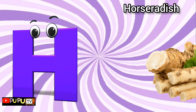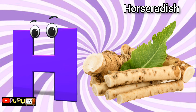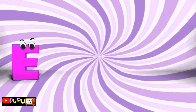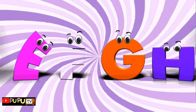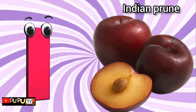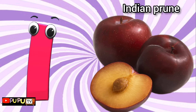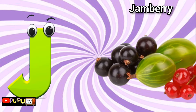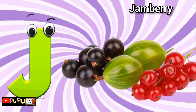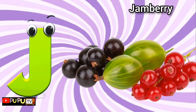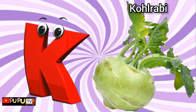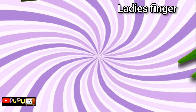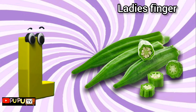H is for horseradish. I is for Indian prune. J is for jamberry. K is for kohlrabi. L is for lady's finger.